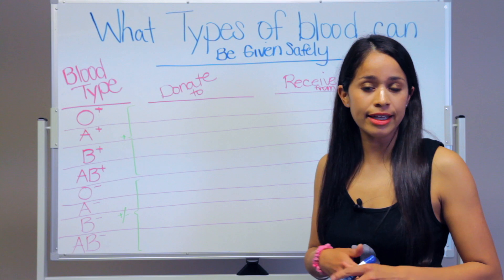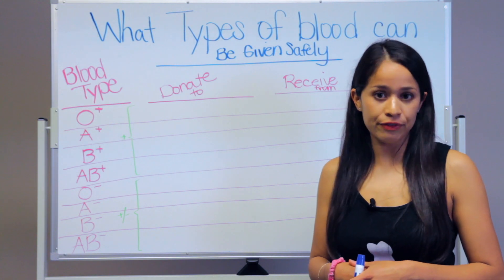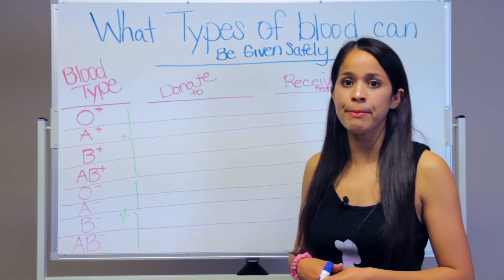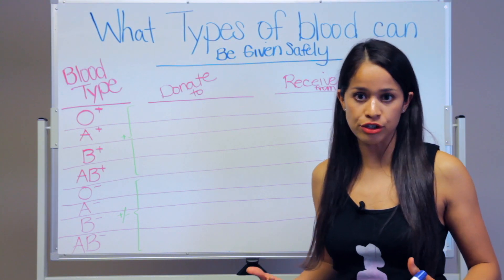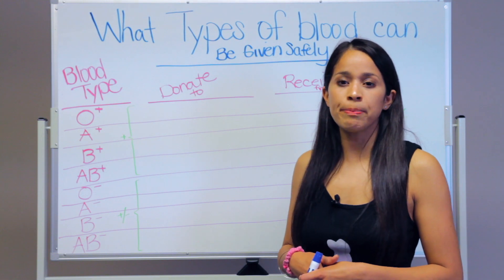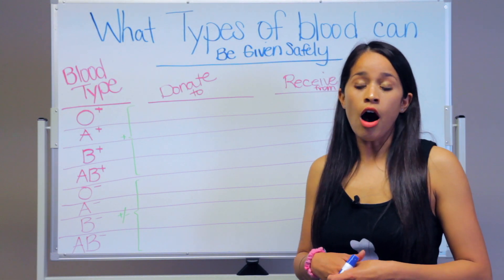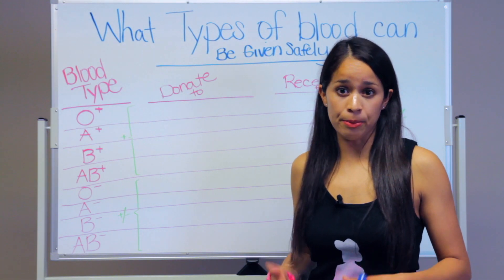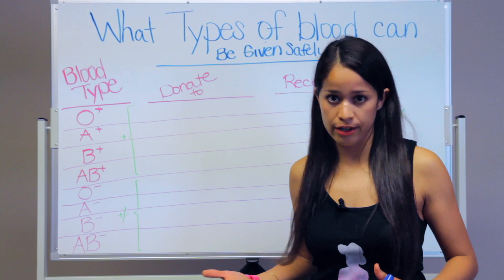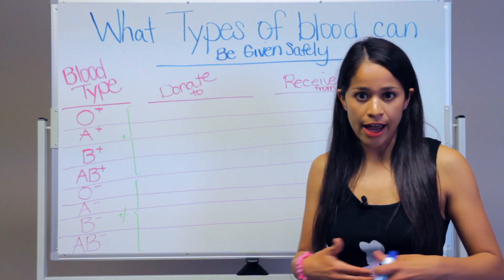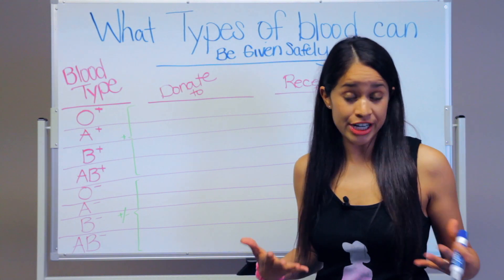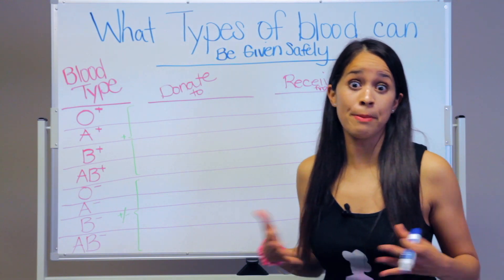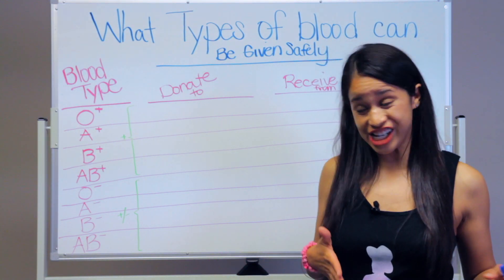What type of blood can be given safely to a patient during a blood transfusion? Remember the RH factor: if the patient is RH positive, they can receive either positive or negative blood. If they are RH negative, they can only receive negative blood.